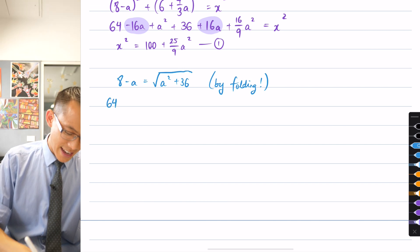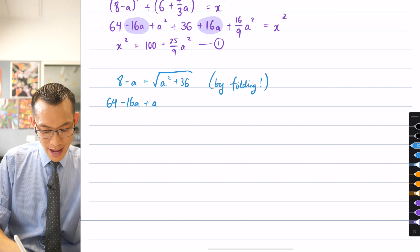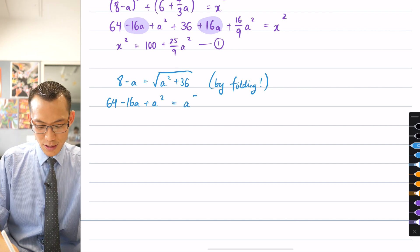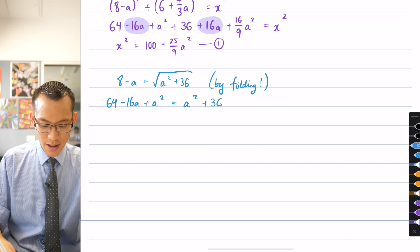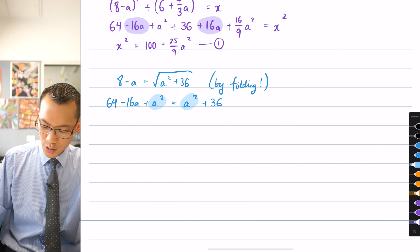That's going to give me, on the left-hand side, 64 take away 16A plus A squared. On the right-hand side, it's just going to get rid of that radical, that square root sign, A squared plus 36. Like I alluded to before, these A squareds are just going to cancel.